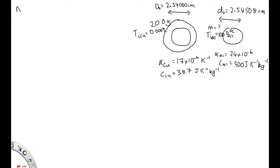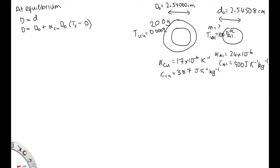At equilibrium, the diameter of the ring is equal to the diameter of the sphere. The diameter of the ring is equal to the initial diameter plus the thermal expansion coefficient for copper times the initial diameter of the ring times the change in temperature, which is the final temperature minus the initial temperature of the copper, which is 0 degrees C. The final diameter of the sphere is given by the initial diameter of the sphere plus the thermal expansion for the sphere times the initial diameter times the final temperature minus 100. This will be a negative number, because it ends up at a cooler temperature, so it will be smaller than d0.